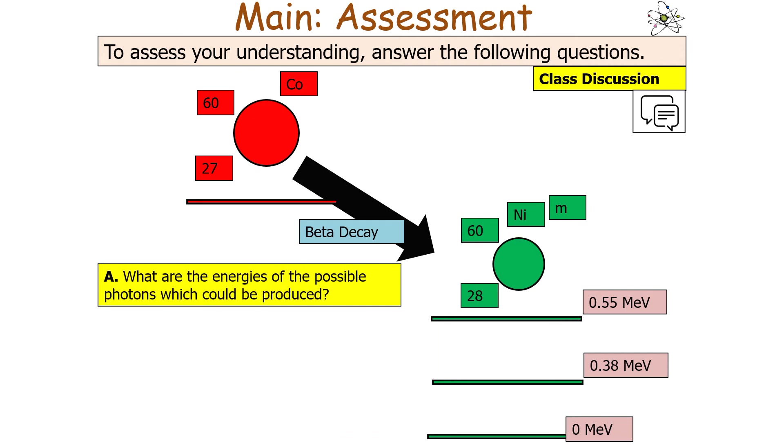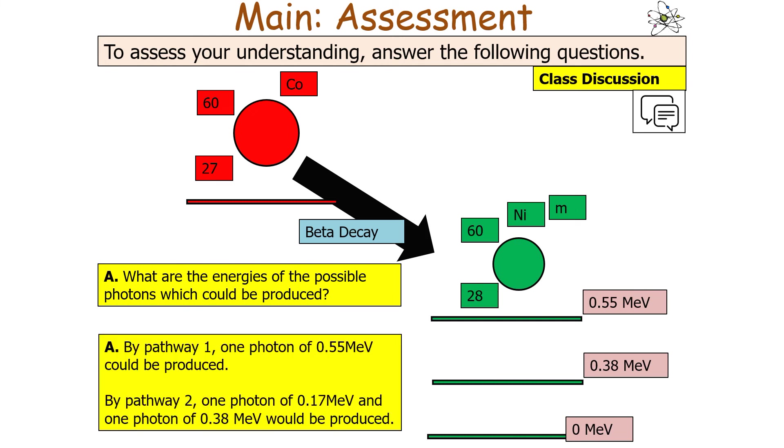The next question asks what are the energies of the possible photons produced in this decay process? By pathway 1, you'd have one photon of 0.55 MeV being produced, which is the difference between the excited state and the ground state. Whilst in pathway 2, you'd have one photon of 0.17 MeV, which is the difference between 0.55 MeV and 0.38 MeV, and one photon of 0.38 MeV.